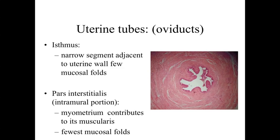As we get closer and closer to the uterus itself, the uterine tubes are going to be condensed down, and those mucosal folds are going to become less elaborate, basically funneling the ovum into a smaller and smaller structure that will ultimately deliver it into the uterus. The isthmus is a narrow segment adjacent to the uterine wall with relatively few folds. The pars interstitialis is the intramural portion with relatively few mucosal folds. We've got the myometrium — essentially a portion of the smooth muscle of the uterine wall — which is going to be surrounding and forming the wall structure of the oviducts.